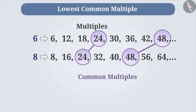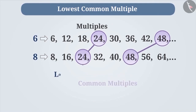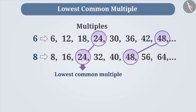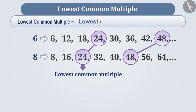24 is the lowest number among the common multiples of 6 and 8. Therefore, it is called the lowest common multiple. That means, for any two or more given numbers, the lowest of the common multiples is called the lowest common multiple or LCM.